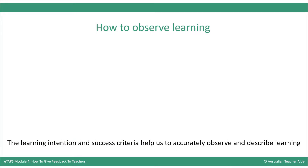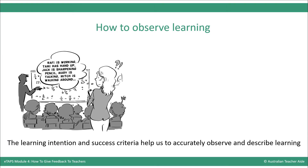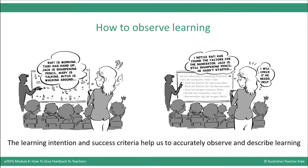The learning intention and success criteria help us to accurately observe and describe learning. For example, in this busy classroom the TA doesn't know what the teacher wants her to observe and is feeling confused as there are so many things going on. Now compare it with this picture — this time the TA knows that the students are learning to simplify fractions. Did you say something like the teacher wants to know if the students can successfully simplify fractions?